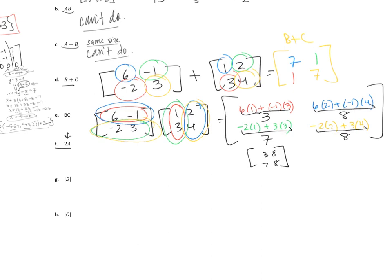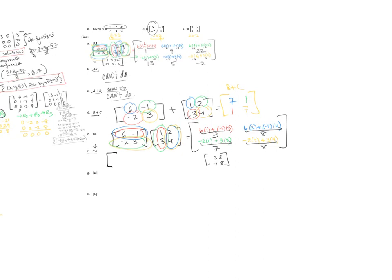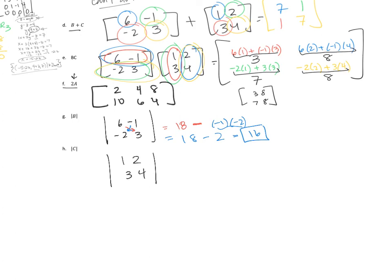For 2 times matrix A — scalar multiplication — just double every entry in A: gives 2, 4, 8, 10, 6, 4. For the determinant of matrix B (6, negative 1, negative 2, 3): diagonal gives 18, minus negative 1 times negative 2 equals minus 2, so determinant equals 16. For the determinant of matrix C (1, 2, 3, 4): diagonal gives 4, minus 6, so determinant equals negative 2.